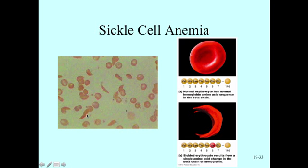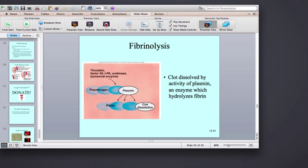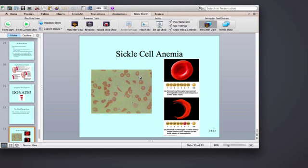Interestingly, sickle cells tend to be resistant to malaria. In countries where malaria is a problem, being a carrier — having mild sickle cell anemia because a person is heterozygous for the sickle cell gene — actually makes them resistant to malaria. This keeps the sickle cell gene in the gene pool because it's protective against malaria. However, those who are homozygous recessive for sickle cell anemia have the disease and often have difficulty throughout their life, and may even have a shortened lifespan because of the problems associated with sickle cell anemia.